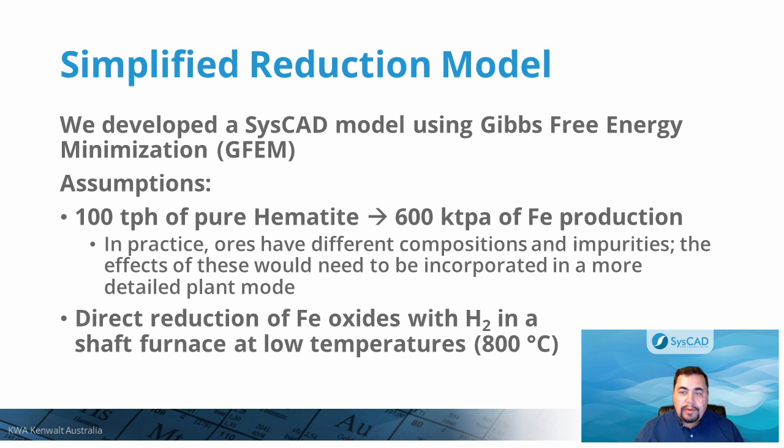In practice, ores have different compositions and impurities, and the effect of this would need to be incorporated in a more detailed plant model. The direct reduction of iron oxide with hydrogen in a shaft furnace at low temperatures is the case we took for this simulation.